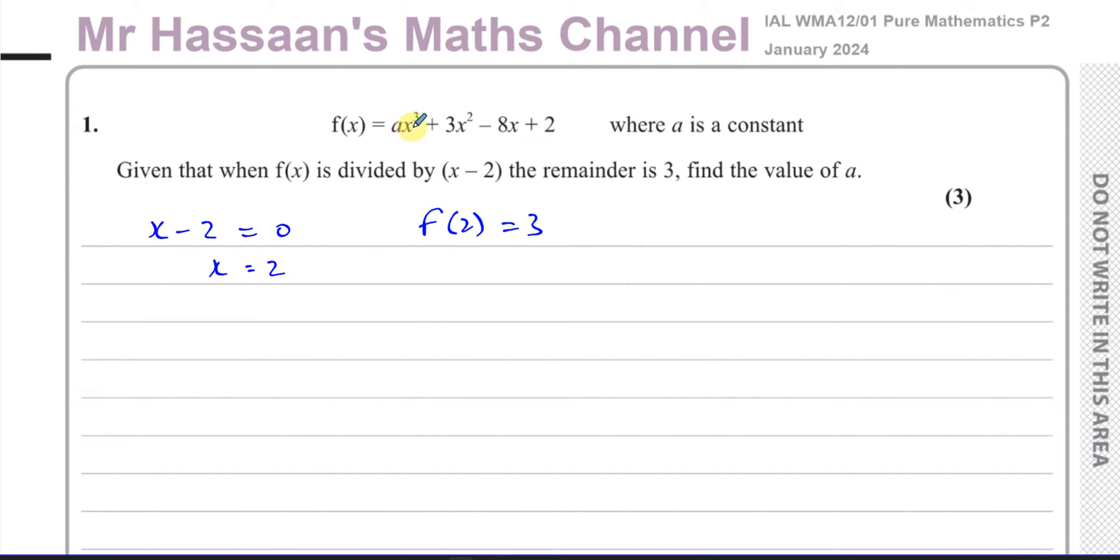I'm going to now replace the x in this function with 2. So I'll have a(2³) + 3(2²) - 8(2) + 2 = 3. When I solve that for a, I should get my answer. It's going to be 8a + 12 - 16 + 2 = 3. So 14 - 16 is -2. So 8a - 2 = 3. 8a = 5, so a = 5/8.